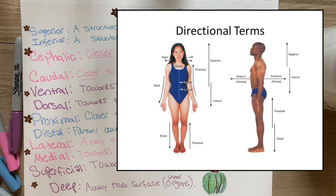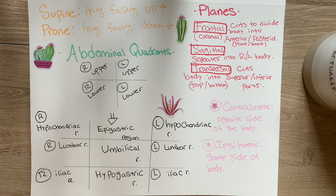There are two more directional terms to include: contralateral and ipsilateral. Contralateral means the opposite side of the body — for example, the left arm is contralateral to the right leg. Ipsilateral means the same side of the body — for example, the right arm is ipsilateral to the right leg.